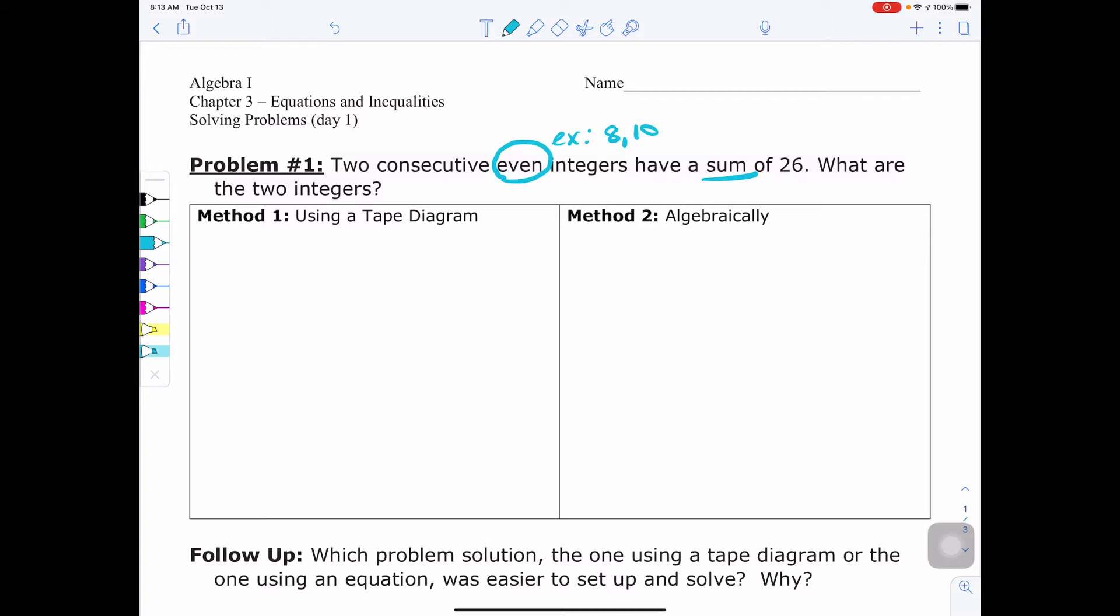So with method 1, using a tape diagram, I'm going to draw my first bar, which is my first consecutive number. And then I'll make my second bar the same size, second consecutive number. But remember, it's even. So we have to take and add two pieces here to show the consecutive even part of it. So it's just two units larger than the first consecutive number. And these together add to 26.